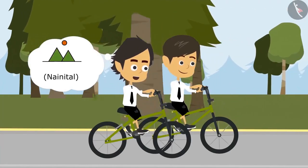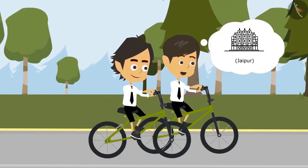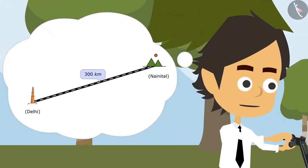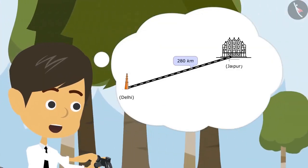I am going on a trip to Nainital. Really? And we are going to Jaipur. Nainital is 300 kilometers away from here. Is that so? And Jaipur is 280 kilometers away.